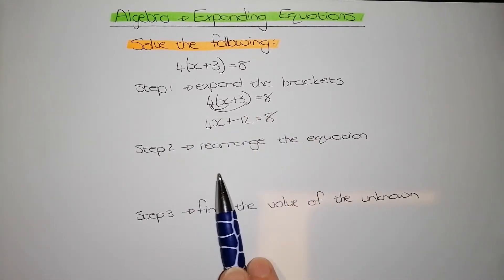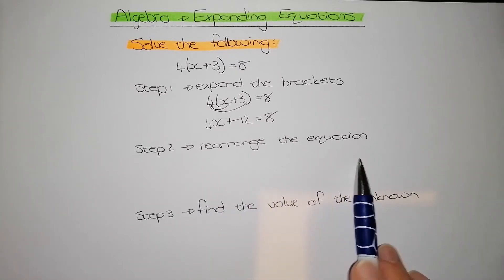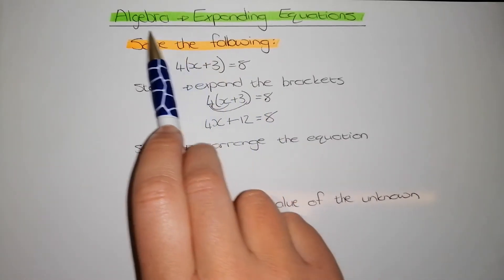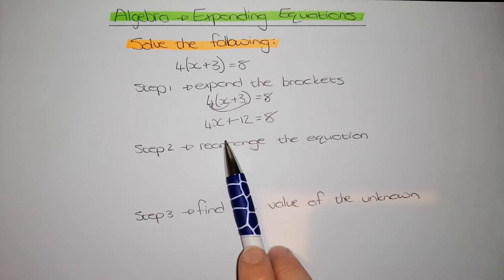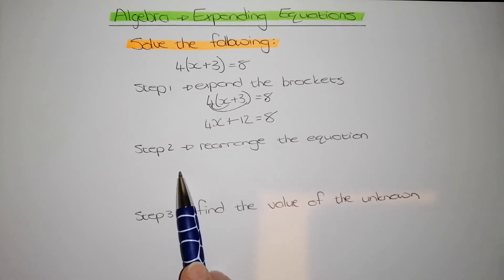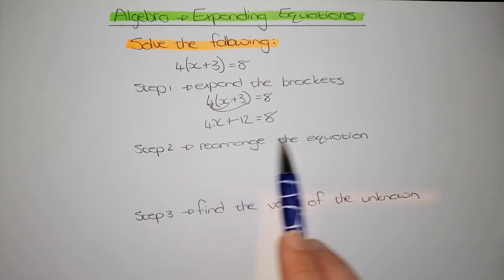Then I go to step 2. I need to rearrange the equation. Remember, when I'm asked to solve something, I need to find the value of an unknown. Therefore, I need all the unknowns on one side of the equal sign, and all the numbers on the right-hand side.